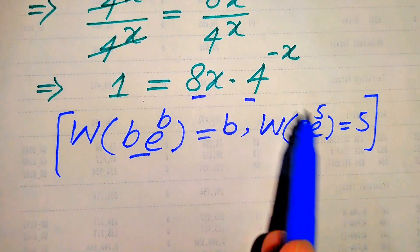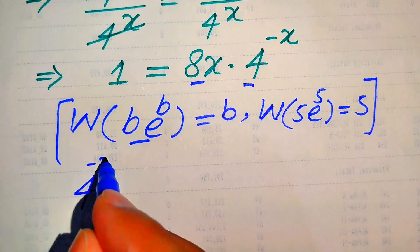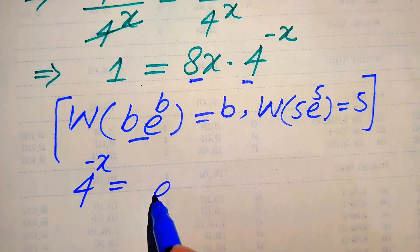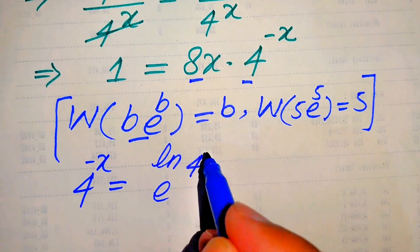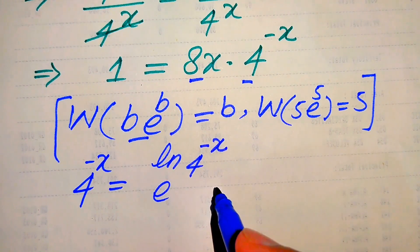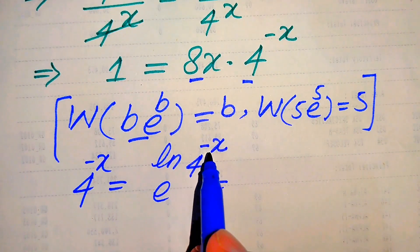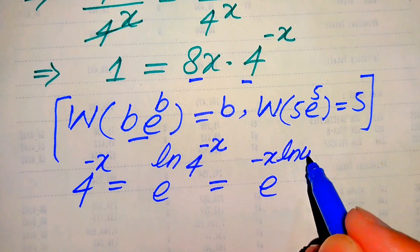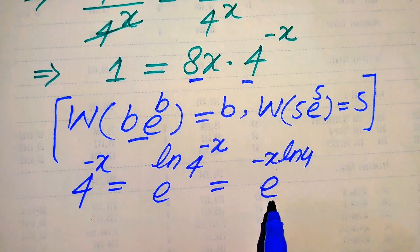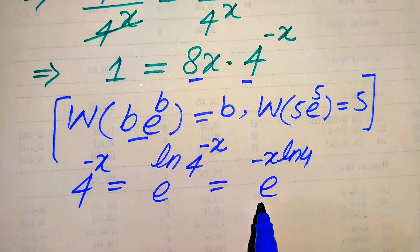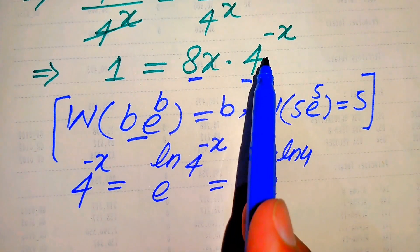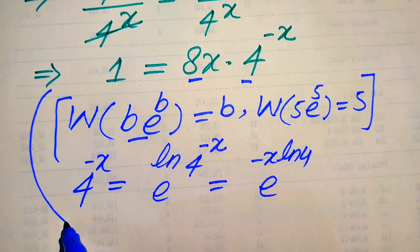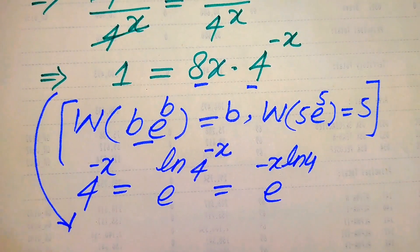We focus on 4 to the power of -x and apply log and anti-log simultaneously. It is written as e to the power of log(4^(-x)). Applying the log power rule, we move the -x to the front, giving e to the power of (-x · log 4). We then replace 4^(-x) with e^(-x · log 4) in our equation.